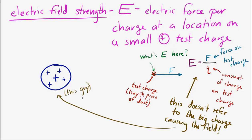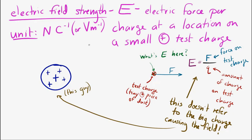One useful thing about this is the equation gives us a good unit for the electric field: the Newton per Coulomb. Another option turns out to be the volt per meter, but we're not going to worry about that right now since we haven't seen volts yet. But if you do see a volt per meter, don't freak out — it's equivalent to a Newton per Coulomb.